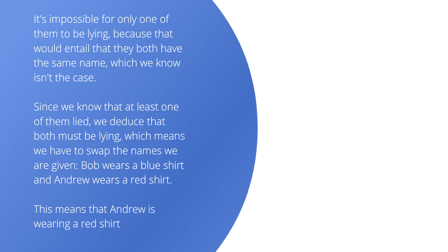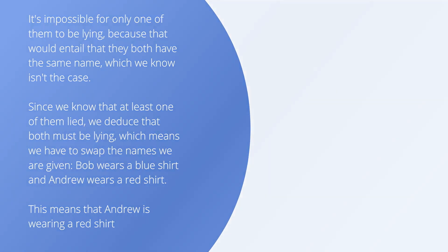It is impossible for only one of them to be lying because that would entail that they both have the same name, which we know isn't the case. Since we know that at least one of them lied, we deduce that both must be lying, which means we have to swap the names we were given. Bob wears a blue shirt and Andrew wears a red shirt. This means that our answer is that Andrew wears a red shirt.